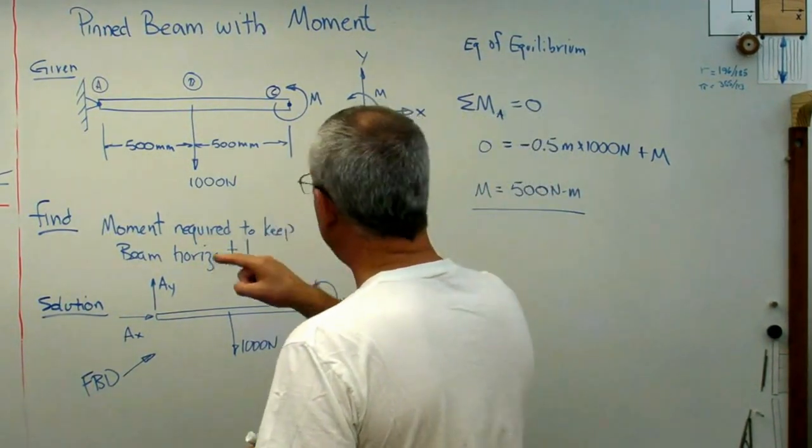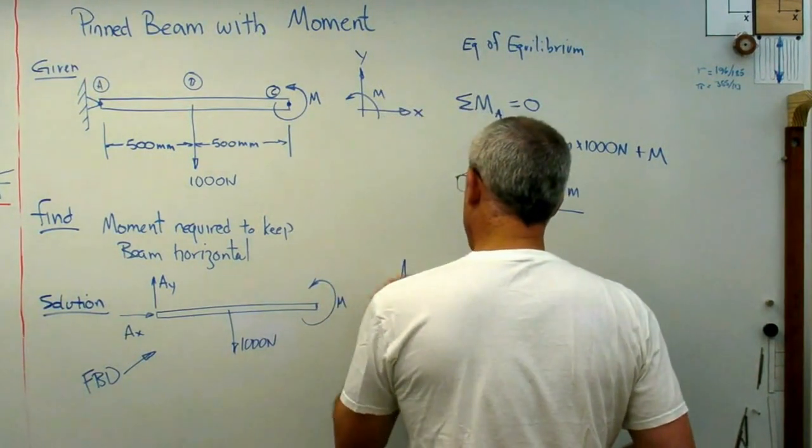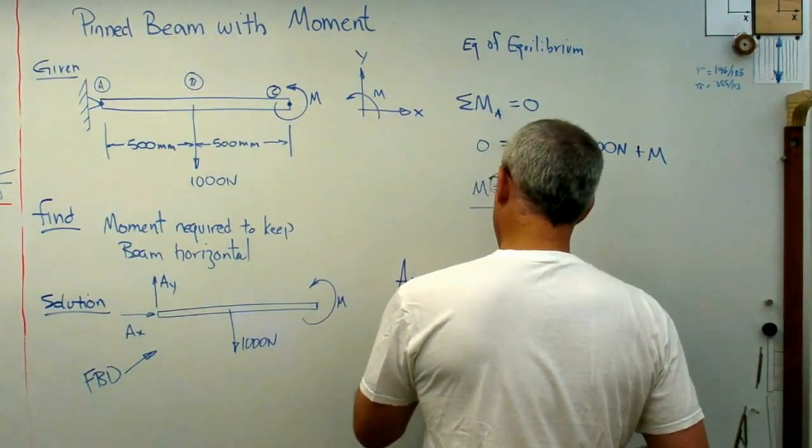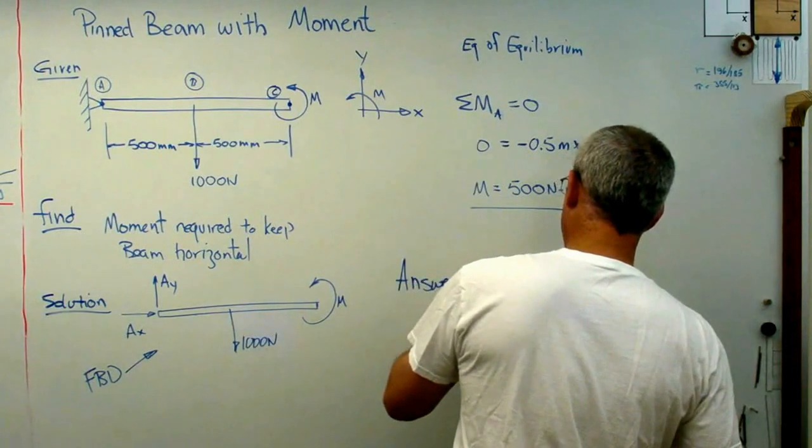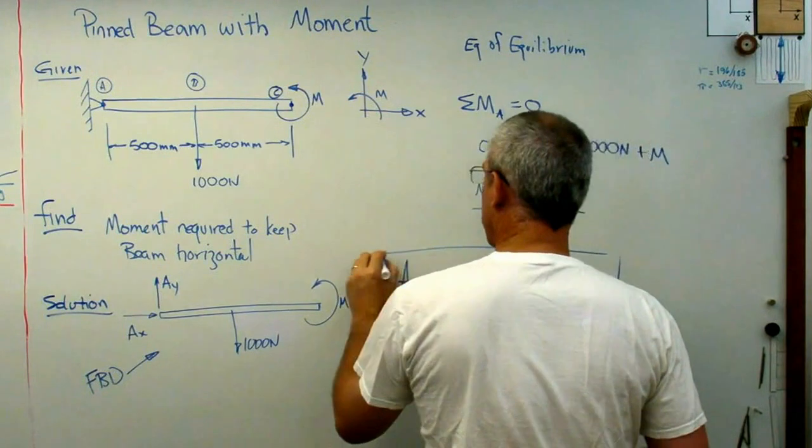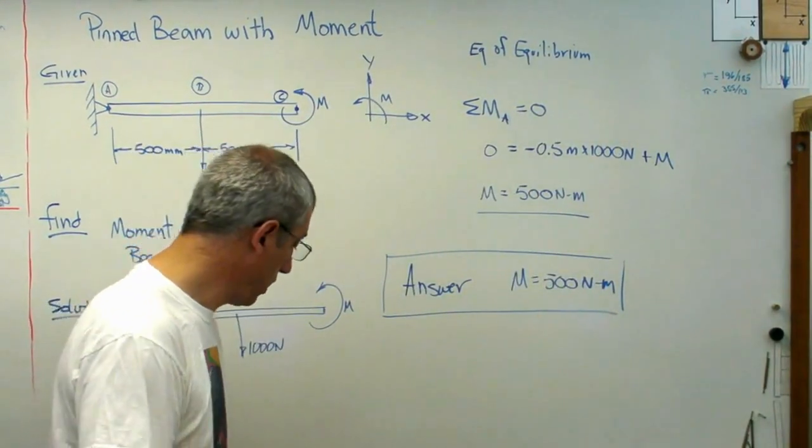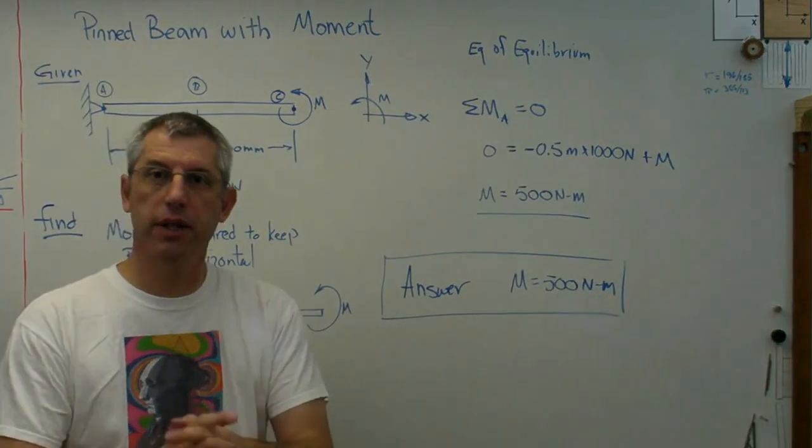So I've gone G, F, S. The last thing I need to do is put the A in there. So I'm going to say answer, and I'm going to write M equals 500 newton meters, and I'm going to draw a box around it. So there you go. Hope this helps, and I'll see you next time.